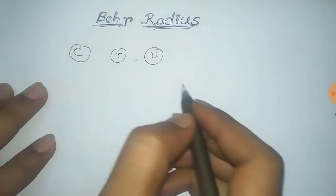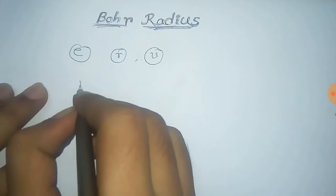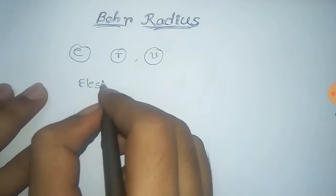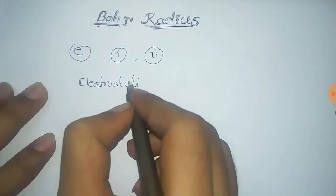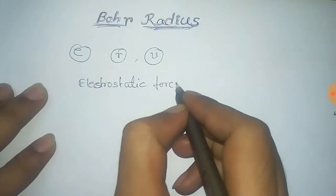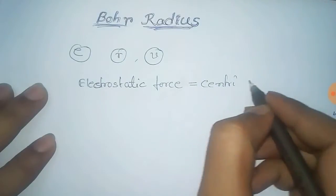Then the electrostatic force on the electron due to the nucleus would be equal to the centripetal force on the electron, because this electrostatic force provides the centripetal force.